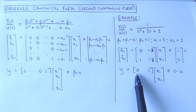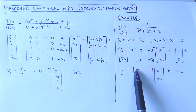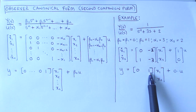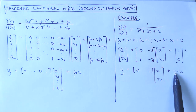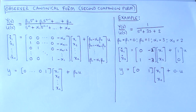The C vector contains 0s except for the last element, which is 1, and the scalar D is equal to beta 0, which is 0. The observer canonical form is a convenient form when we want to design an observer later in this module, making the design process very easy.